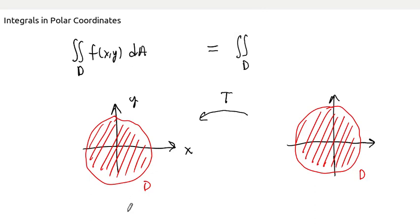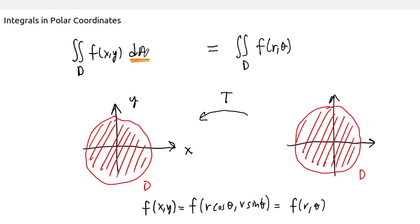We just have to transform the rest of the integral. The function f, so f is a function of x and y, but remember we have a way to transform x and y. So f of xy, this can be written as f of r cosine theta, r sine theta. And because everything here just depends on r and theta, we can just write this as f of r theta. So the transformation changes the function. We have to do a little work there. We'll see that in the examples. But we don't have to change anything in our writing.